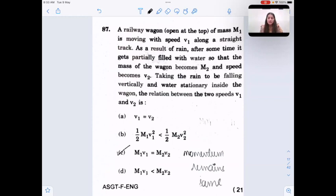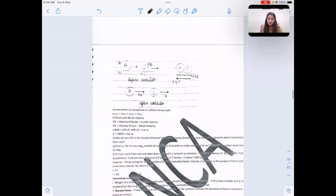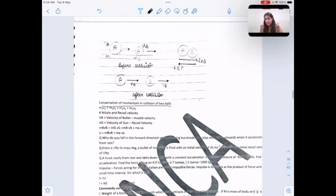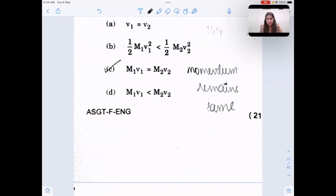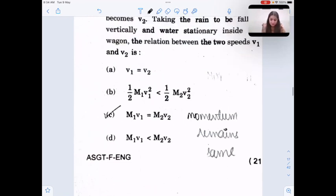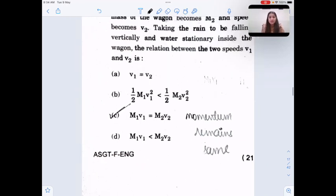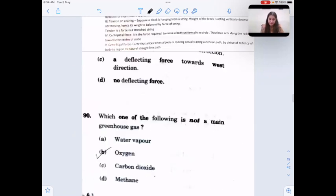A railway wagon of mass M1 is moving with speed V1 along a straight track. As a result of rain, it gets partially filled with water so that the mass becomes M2 and speed becomes V2. Taking the rain to be falling vertically and water stationary inside the wagon, the relation between two speeds is - this concept is based on conservation of momentum because momentum is always conserved. Formula for momentum is M into V. So C is the correct option. It describes that momentum is conserved.